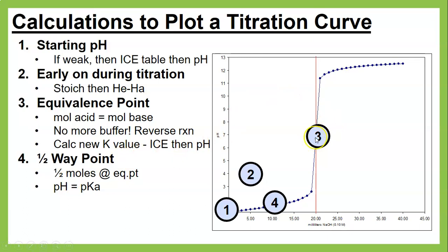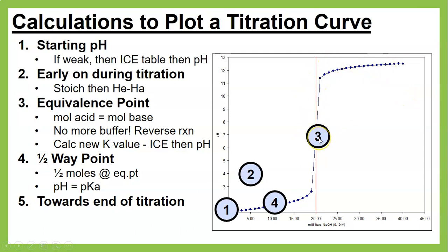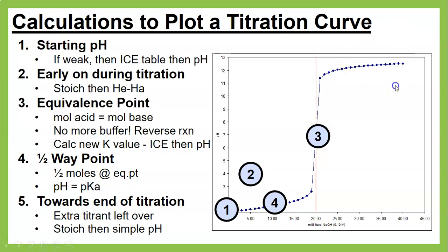Once you go past the equivalence point, you've used up all the acid and now have excess titrant left over. You go back to stoichiometry: how much is left, and what would the pH be based on that amount.